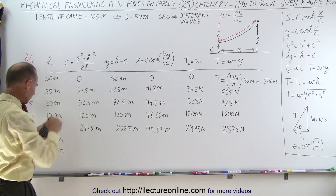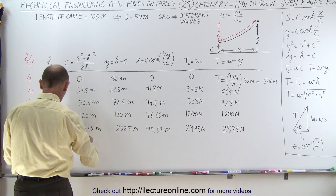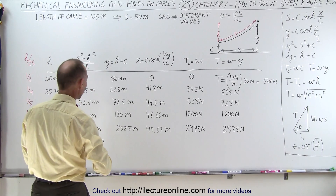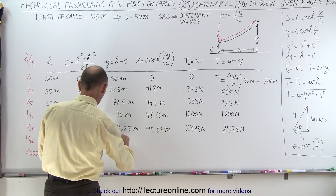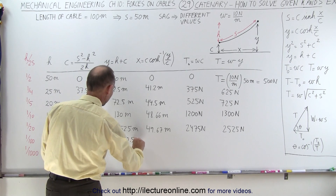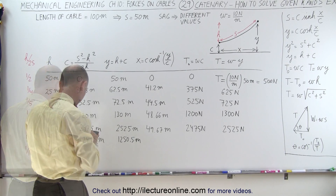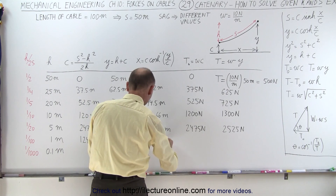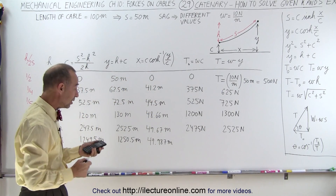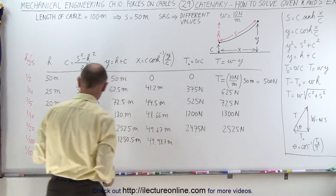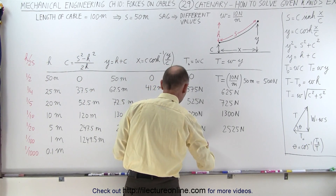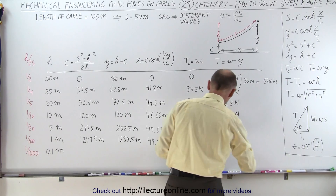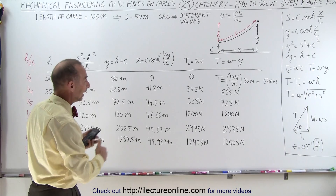With a sag of 1 meter, C equals 1249.5 meters and Y equals 1250.5 meters. Dividing Y by C and taking the inverse hyperbolic cosine multiplied by C gives X equal to 49.987 meters — getting really, really close to 50. The tension at the low point is now 12,495 newtons and the tension at the attach point is 12,505 newtons. There's only 10 newtons difference between the tension at the low point and the tension at the high point.